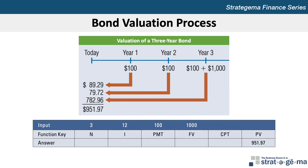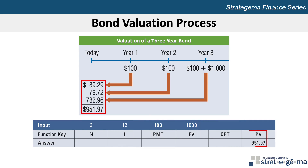When using a financial calculator, we would simply enter 3 as the number of periods N, 12 as the yield to maturity I, 100 as the coupon payment PMT, and 1,000 as the face value of the bond FV. Both the formula and the calculator will yield a present value of $951.97.